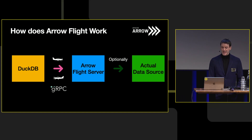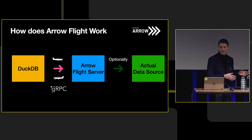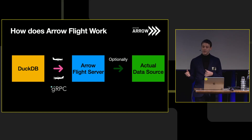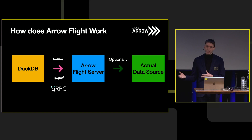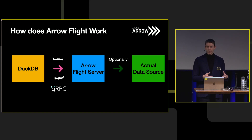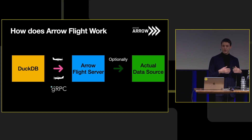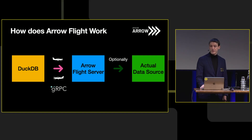The big question is, how does Arrow Flight work? DuckDB is on the left. We talk to a thing called an Arrow Flight server that can either produce the data or return the data, or optionally talk to the data source. Currently DuckDB doesn't really talk to RPC mechanisms — this is a change. Now we're going to reach beyond the single-core machine to other resources over the network using gRPC.